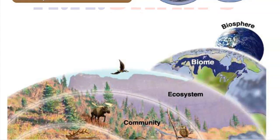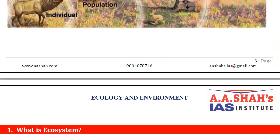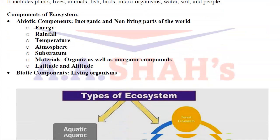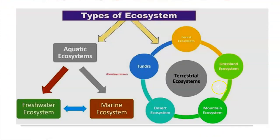Next we come to our topic Ecosystem in more detail. An ecosystem is the structural and functional unit of the biosphere consisting of living organisms as well as the physical environment. There are two main types of ecosystems: aquatic and terrestrial. Note there is no aquatic biome, but an ecosystem can be aquatic - either freshwater or marine. Terrestrial ecosystems include forest, grassland, mountain, desert, and tundra ecosystems.